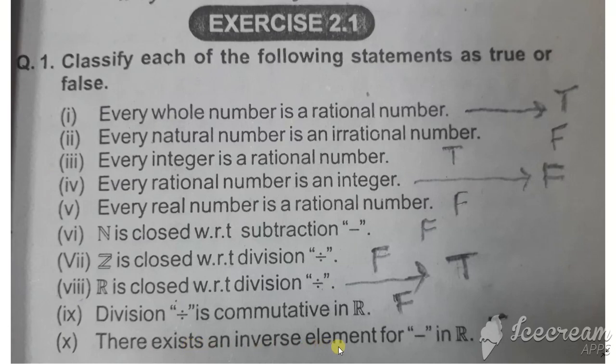Statement ten: There exists an inverse element for negative in R. The inverse element for division does not exist for all real numbers. If the divisor is zero, there is no inverse. So this statement is false.